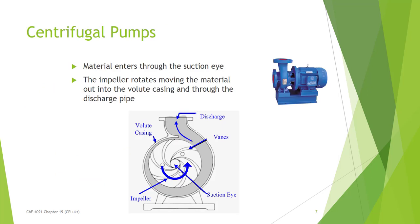Centrifugal pumps are going to be the mainstay of what we do in a chemical plant. Material comes in through the suction eye into the rotating impeller, which throws the material outward — that's what happens when you rotate equipment. This increases the pressure and kinetic energy, and the fluid is then collected on the discharge side and sent on to the next location.